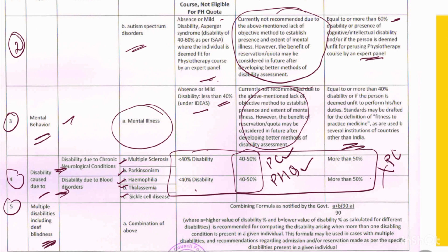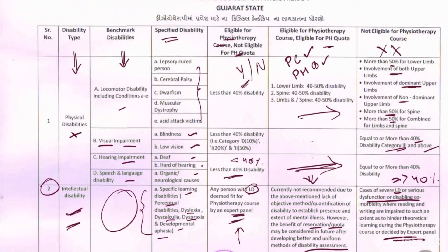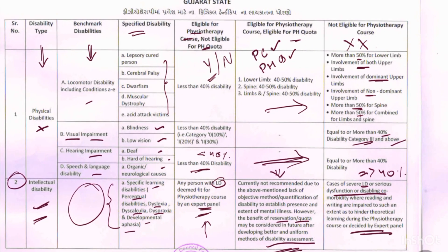The last criteria is multiple disability including deaf and blindness, which consists of a combination of the above categories using a combining formula as noted by the government — the formula is shown here for calculating combined disability percentage. Before getting admission under the physically handicapped quota, you need to obtain a disability certification. I'll see you in my next video — bye bye!